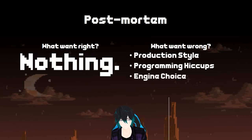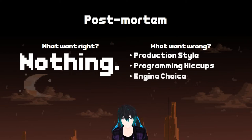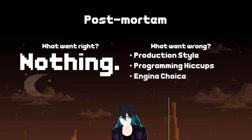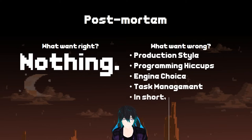The biggest problem was the engine choice. If we had gone with MonoGame, we would have had a significantly easier time. MonoGame is multi-threaded, optimized, and allows you to display multiple sprites with no issues. The performance would have been significantly better — the game would have run at a steady 60 frames per second. And task management was also another problem. Going back to the production style, I didn't use Agile properly. We didn't use Scrum. We didn't use Kanban. We used none of the production styles you would expect. So in short, everything went wrong.